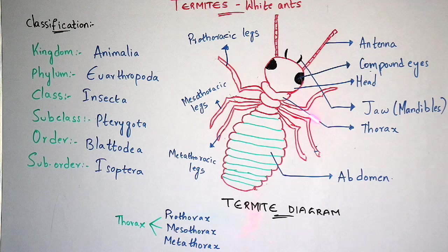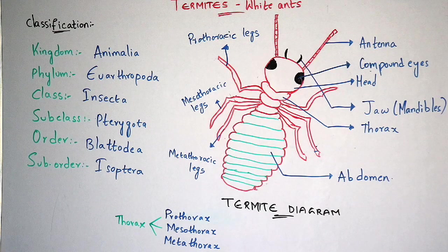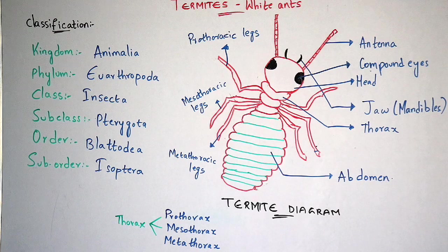Here is the thorax region. Normally there is a division in this thorax region — they are prothorax, mesothorax and metathorax. The legs arising from the prothorax are known as prothoracic legs. Totally, how many pairs of legs are there in this white ant? Totally there are three pairs of legs, that is nothing but six legs in total, arising from the thorax region.